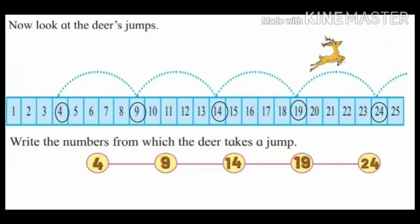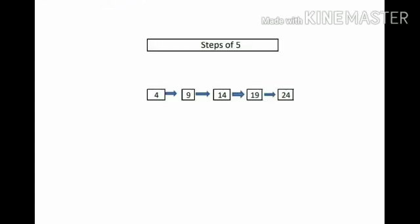Now children, counting 5 numbers forward after 9, you will get 14, and then 19, and then 24. So here from 4 onwards, the numbers we get by counting in steps of 5 are 9, 14, 19, and 24. Understand children? Steps of 5.